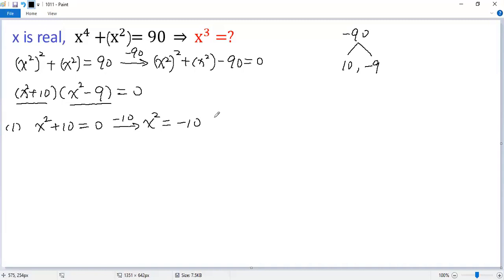we get x² = -10. Because the square of any real number should be non-negative, this doesn't have a real solution.